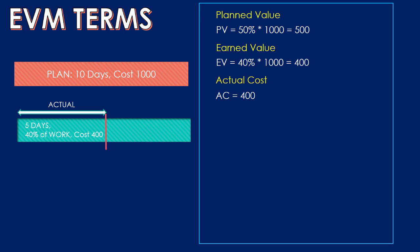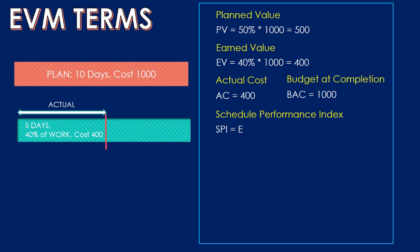The Actual Cost (AC) is straightforward — it has cost us 400 so far. The Budget at Completion (BAC) is simply the total planned cost of the project, which is 1000. Now let's define some indices that measure how efficient we are. The first is the Schedule Performance Index (SPI), which is the ratio of earned value to planned value. It measures our schedule efficiency — how well we are performing according to the planned schedule, not cost.